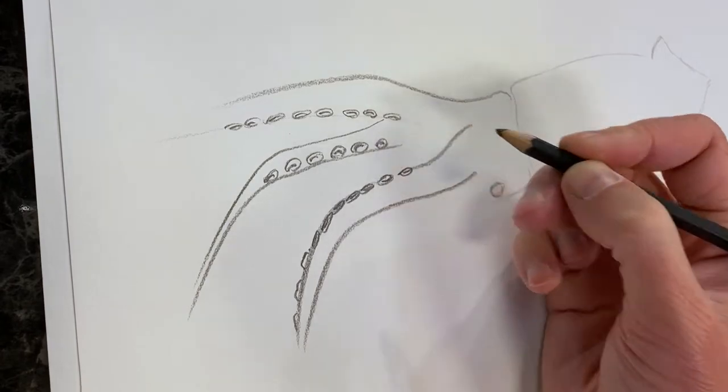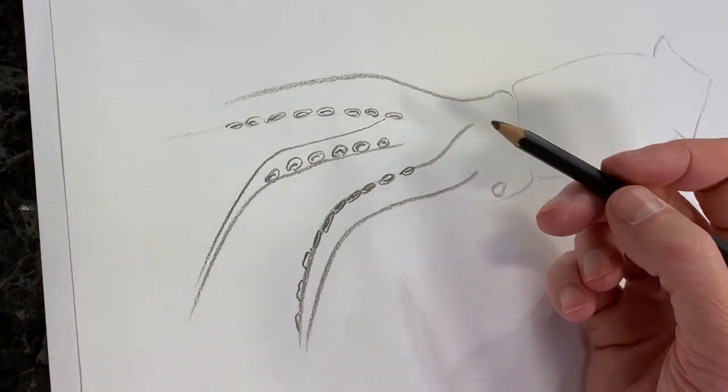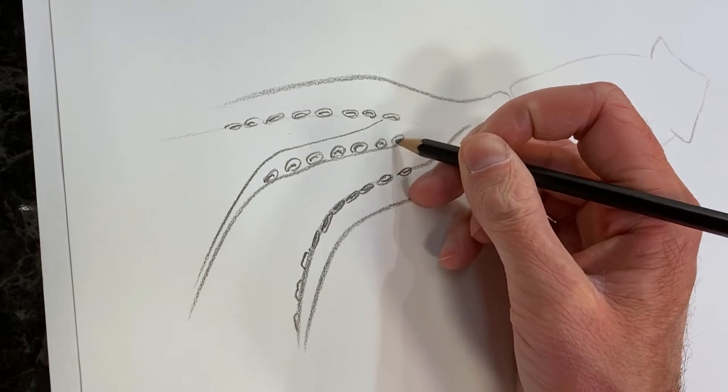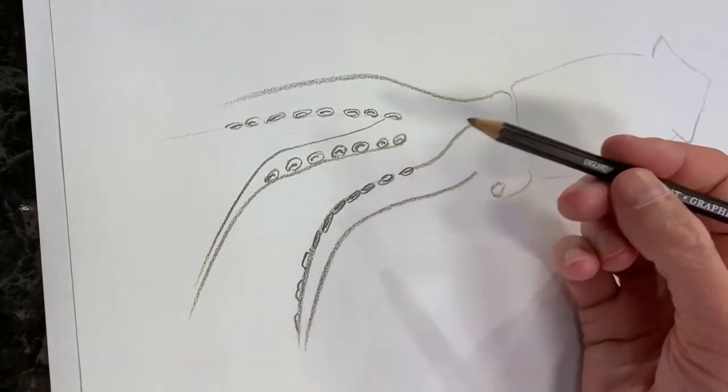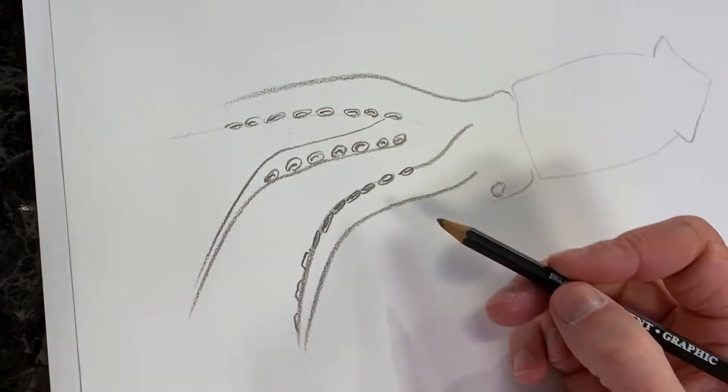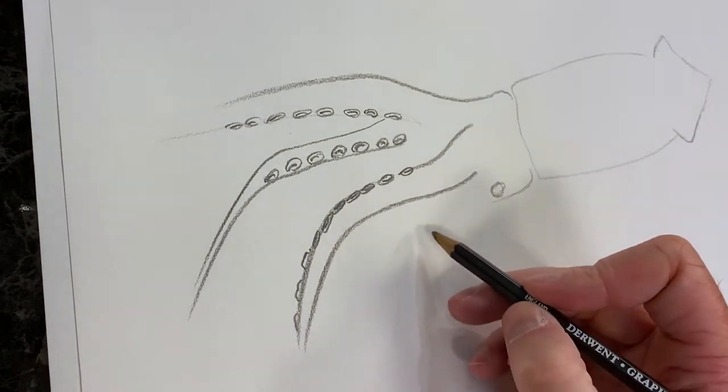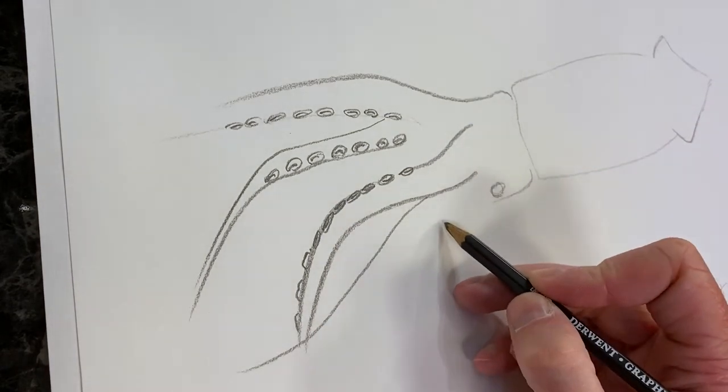So you'll want, you're making a whole bunch of ovals, but you want each one to be slightly different from the others. So each arm of the squid will be curving a little bit differently. So maybe this one comes out like this.